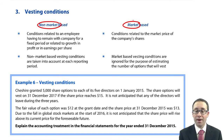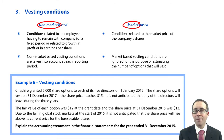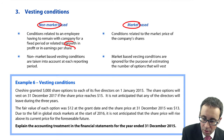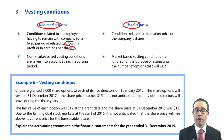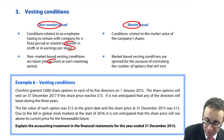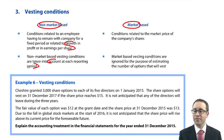The non-market-based vesting condition we've already looked at is whereby an employee has to remain with the business for the vesting period — in all the examples so far, that was three years. Other non-market-based vesting conditions are linked to maybe a growth in profit or in earnings per share. The key point is that we account for those conditions at each reporting date, adjusting for changes in employee numbers and any changes in growth or earnings per share.